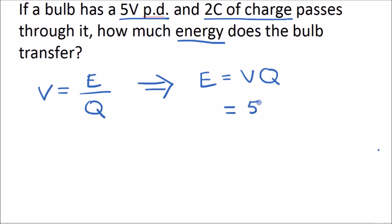Potential difference is 5 volts. Multiply that by 2 coulombs of charge, and we get 10 joules of energy transferred by the bulb.